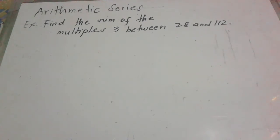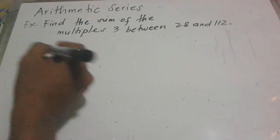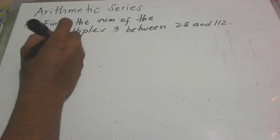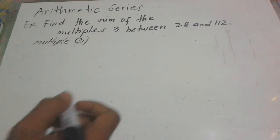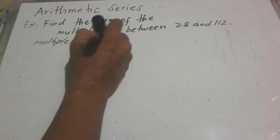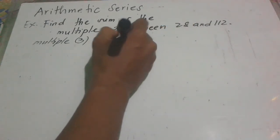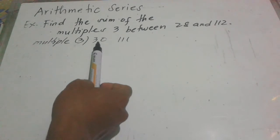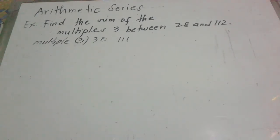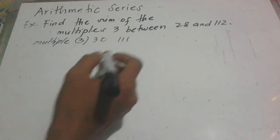For the next example: find the sum of the multiples of 3 between 28 and 112. First, we identify the multiples of 3 in that range. The first multiple of 3 between 28 and 112 is 30, and the last is 111, since 30 divided by 3 is 10 and 111 divided by 3 is 37.